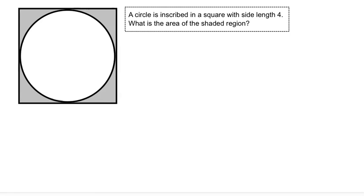The first thing we're going to look at is the side length. We see side length of 4. That's on the square. So if we look at our square, we see a side length of 4.